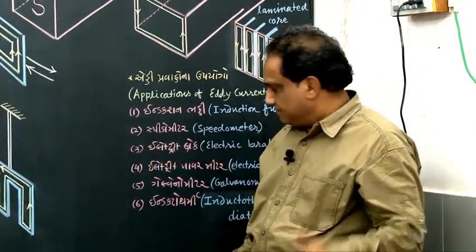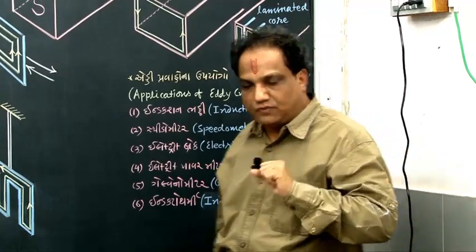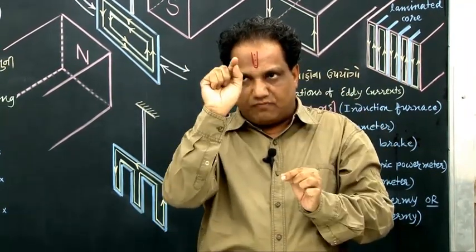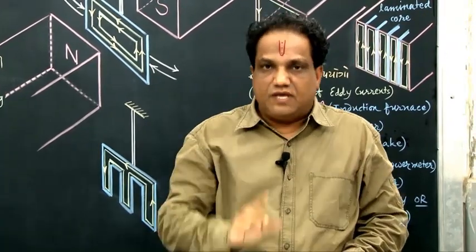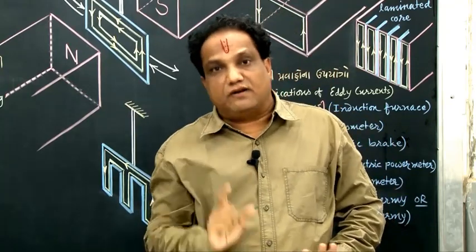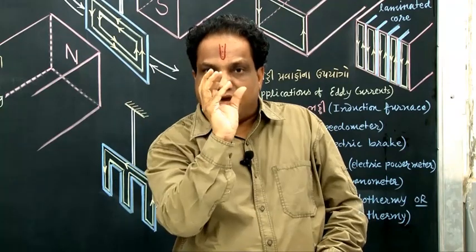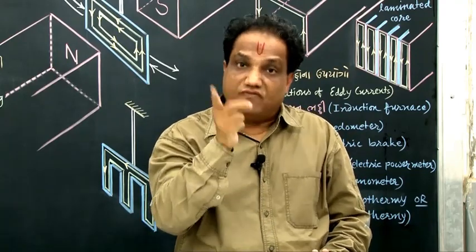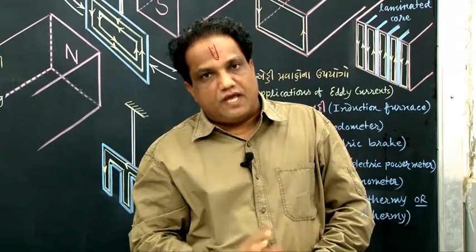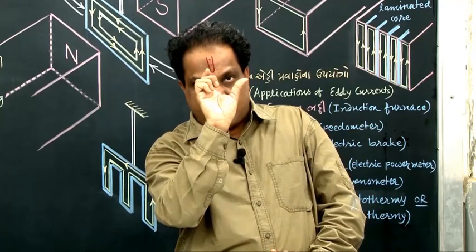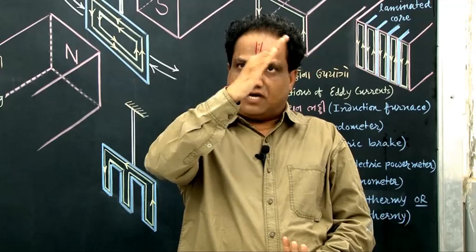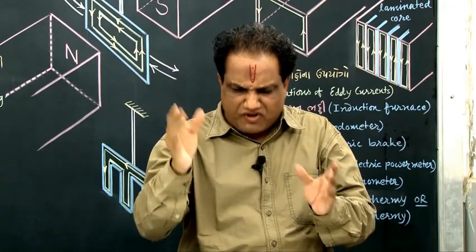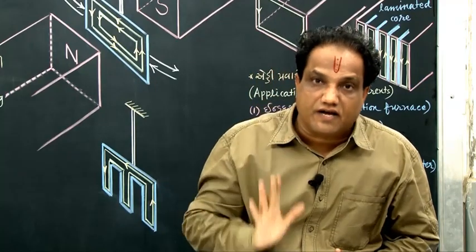Eddy currents are also employed in galvanometers. In the galvanometer, we have a winding of a coil over a rectangular frame made up of metal. Whenever there is a flow of current, some eddy currents are generated in that frame. Because of production of eddy currents in the frame, some anti-torque is developed which opposes the applied torque. Because of that anti-torque, the pointer comes to rest very quickly, giving a steady angular deflection rapidly. That credit goes to the production of eddy currents.